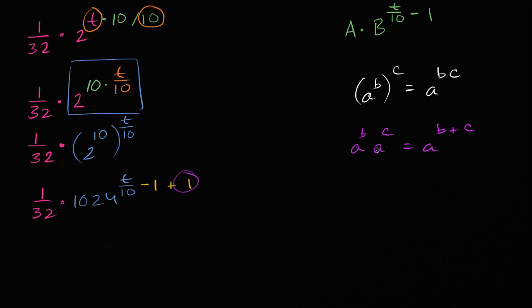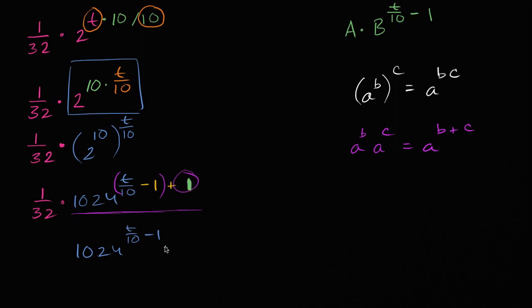If you have the same base raised to different exponents and you multiply them, you can just add the exponents. And you can also go the other way — if you have a to the b plus c, you can break it up into a to the b times a to the c. So this business right over here — 1024 to the t over 10 minus 1 plus 1 — we can break it up as 1024 to the t over 10 minus 1 times 1024 to the 1. And of course we still have the 1/32.